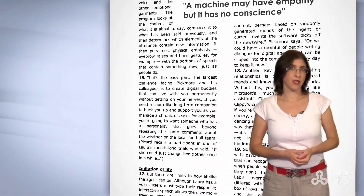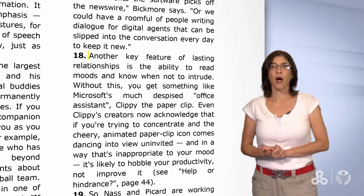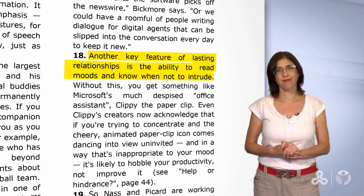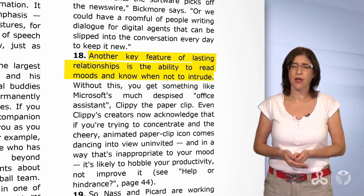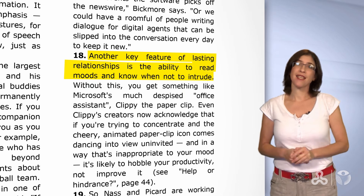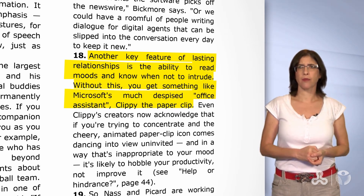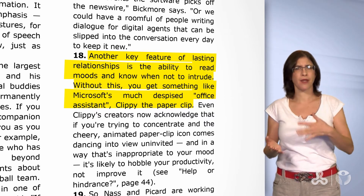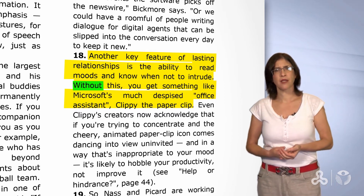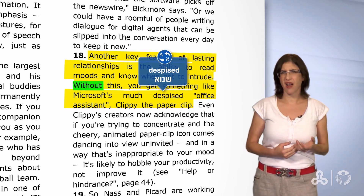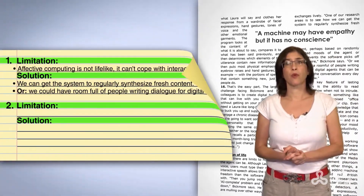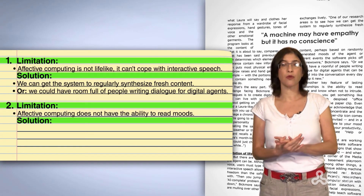Now let's go on to the next limitation and its solution. Let's zoom in on paragraph 18: 'Another key feature of lasting relationships is the ability to read moods and know when not to intrude.' Reading moods is very important in relationships. But let's see if effective computing has the ability to read moods. 'Without this, you get something like Microsoft's much-despised Office Assistant Clippy the Paperclip.' The word 'without' tells us immediately that effective computing does not have this ability. Notice also the word 'despised' — very negative. Here we have one more limitation: effective computing does not have the ability to read moods.